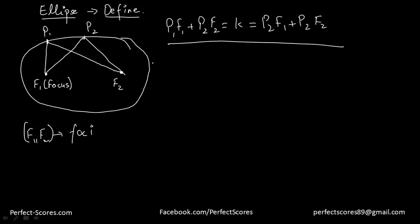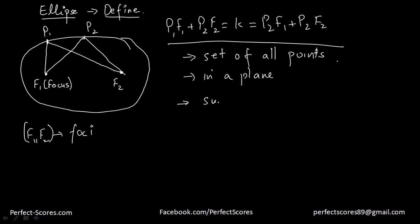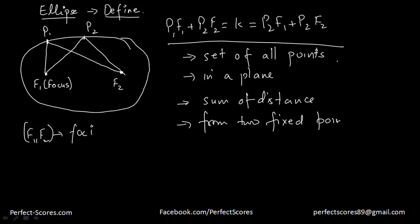That is the definition of an ellipse. An ellipse is a set of all points in a plane whose sum of distances from two fixed points is a constant. As you can clearly see, we've talked about these two focus points here — the sum of distances from two fixed points is a constant.